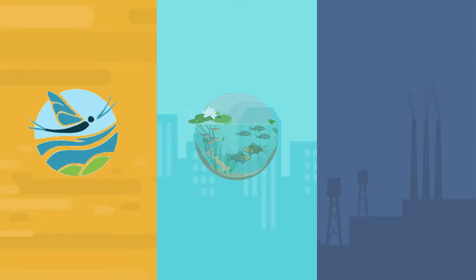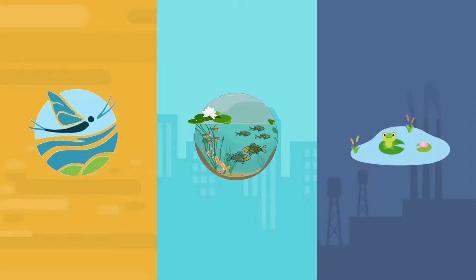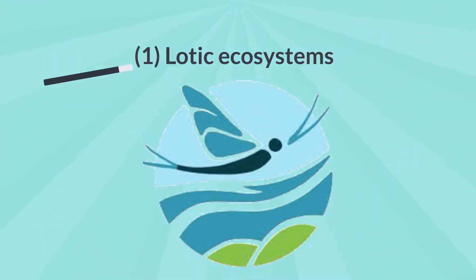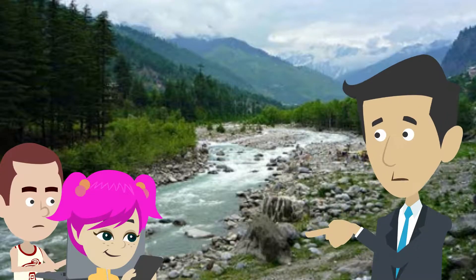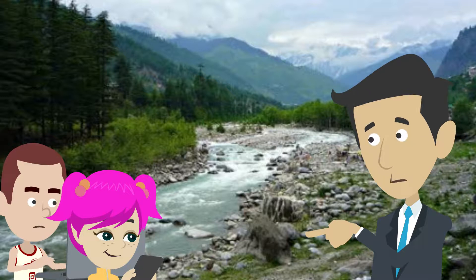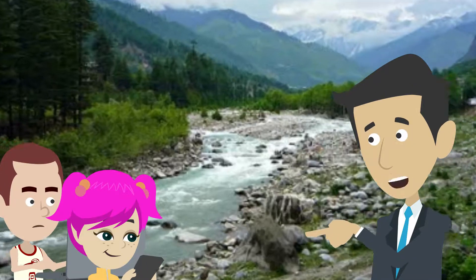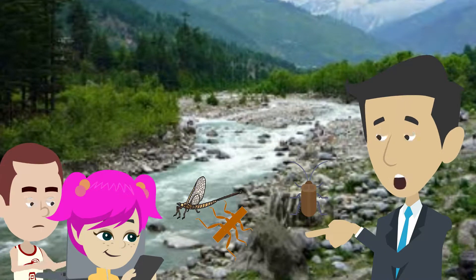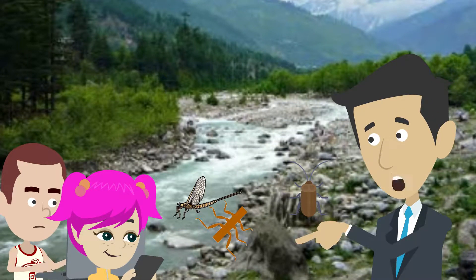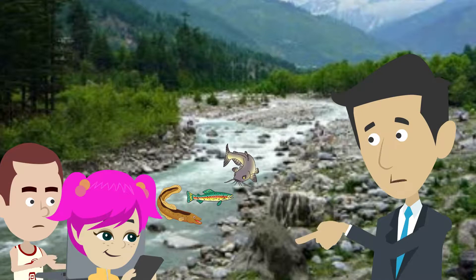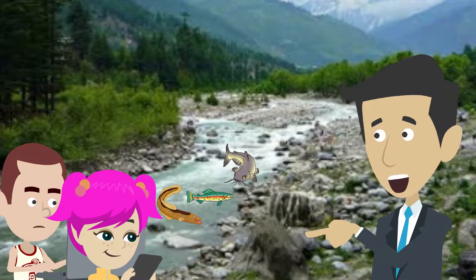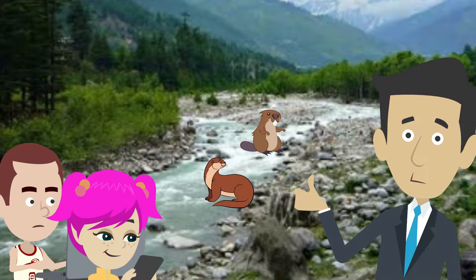Freshwater Ecosystems include: Lotic Ecosystems, Lentic Ecosystems, and Swamps and Wetlands. Lotic ecosystems are systems in which water flows rapidly in a unidirectional manner, such as rivers and streams. There are many kinds of insects in these environments, such as mayflies, stoneflies, and beetles. Several species of fish are found here, such as eel, trout, and catfish. Various mammals such as beavers and otters also inhabit lotic ecosystems.